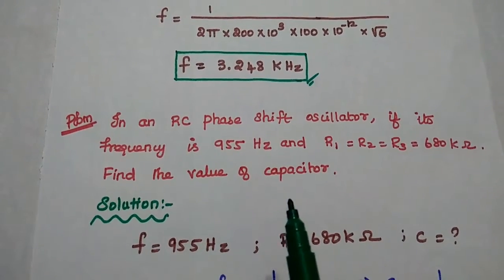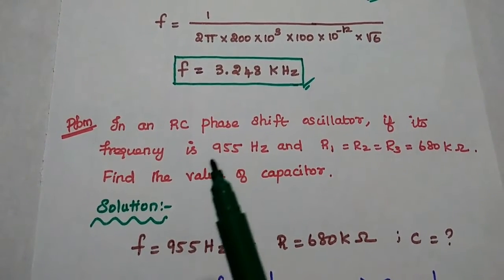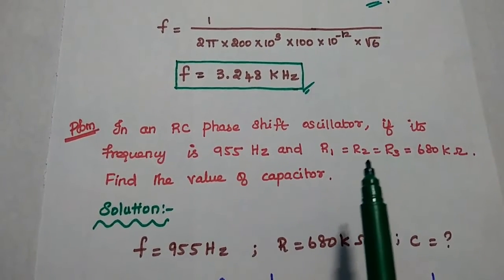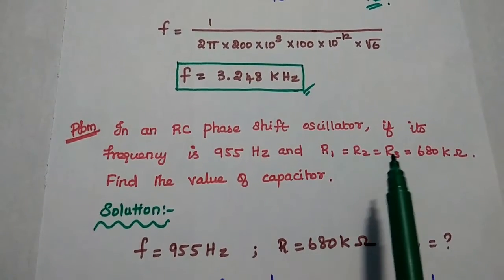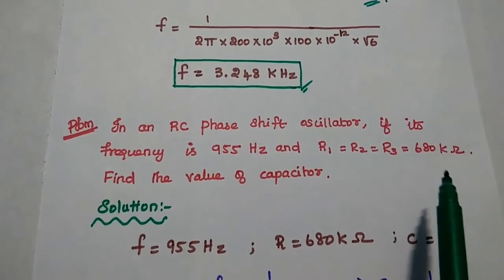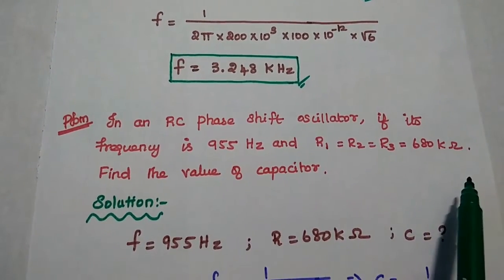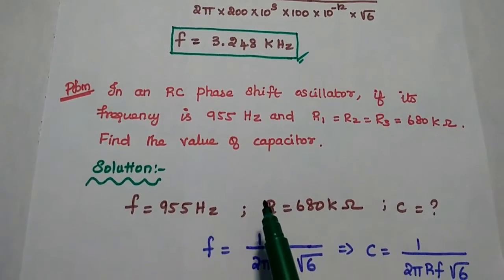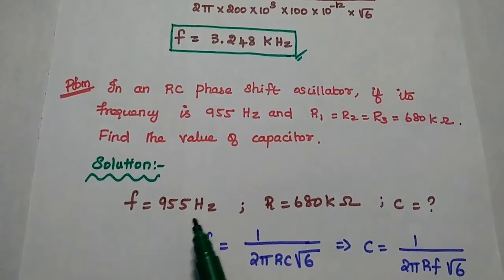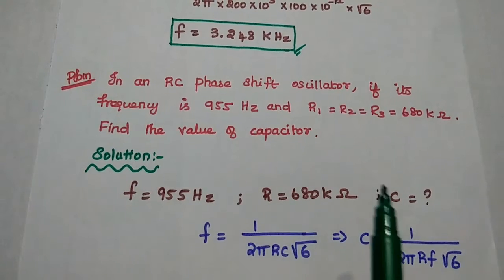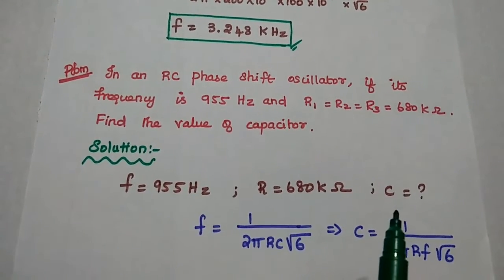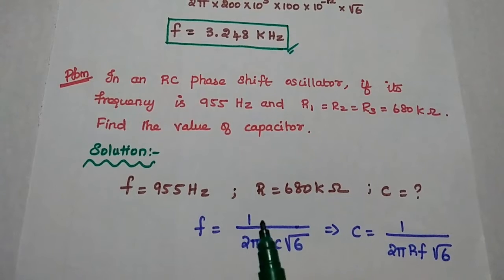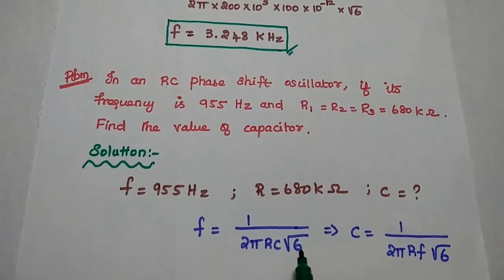Next problem: in an RC phase shift oscillator, if its frequency is 955 hertz and R1, R2, R3 all values are equal to 680 kilo ohm, find the value of capacitor. In this problem, they have given the frequency value and resistor value; we are going to find out the capacitance. We use the formula F is equal to 1 by 2 pi RC square root of 6.